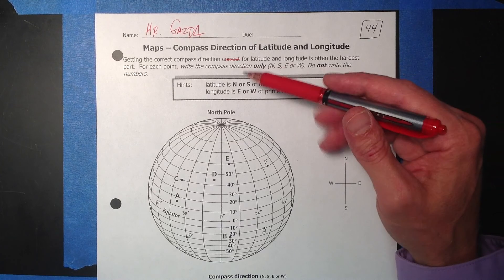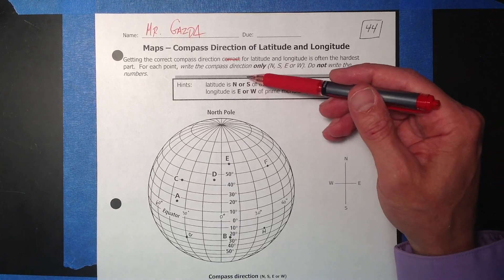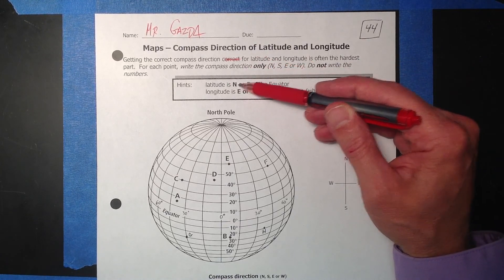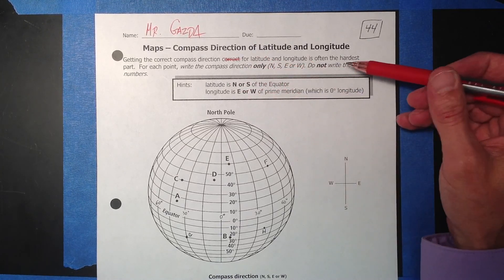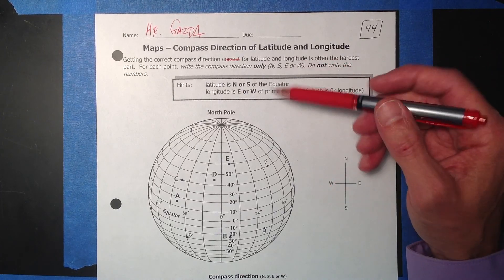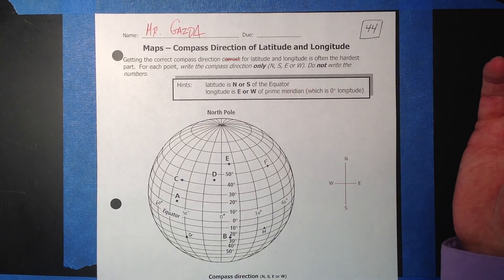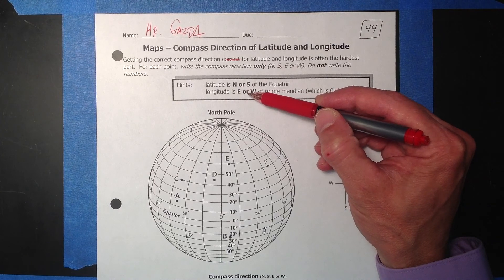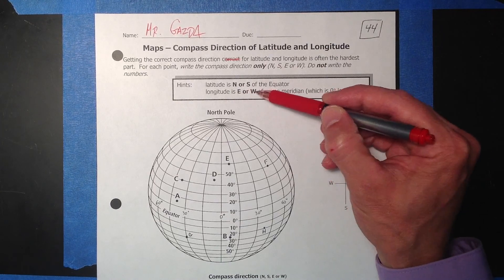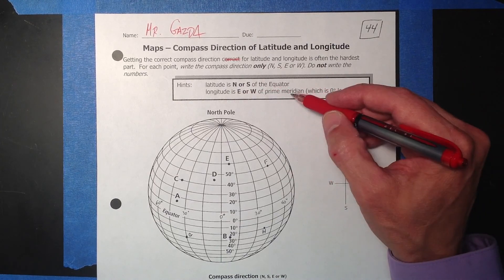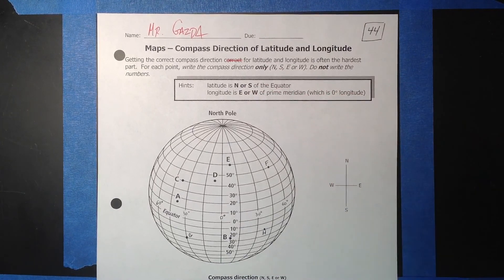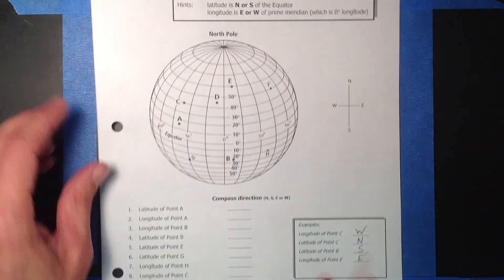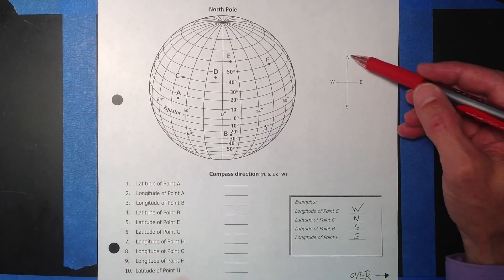This is to focus solely on the compass direction. For instance, latitude is going to be listed as north or south of the equator, after the number, of course, which we're not doing on this one. Longitude, the direction will be either east or west, and you compare that to the prime meridian with zero longitude. Some things to help are as follows.